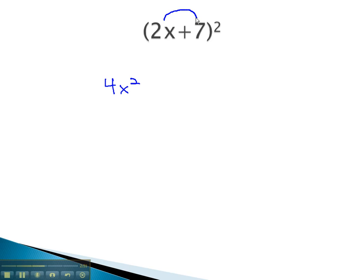2x times 7 is 14x, and another 14x will be positive 28x. And then we square the last term. Squaring 7 will give us 49.